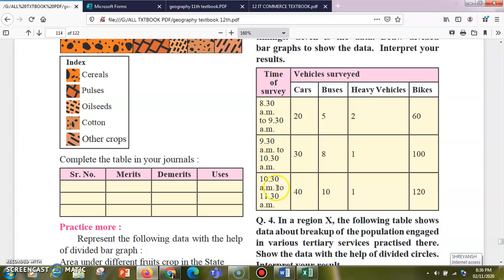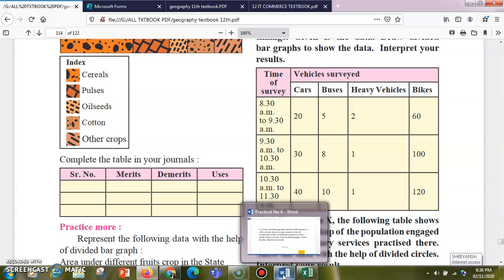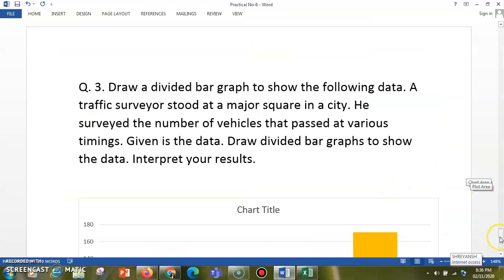These are the timing slots and you have this data. Like cars were 20 between 8:30 to 9:30, then it was 30 between 9:30 to 10:30. This is how the data is interpreted. Now the question is you have to make a divided bar graph. So how to construct it? This is how it will appear.